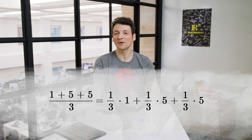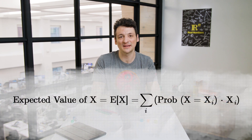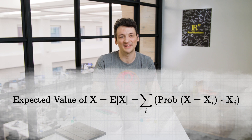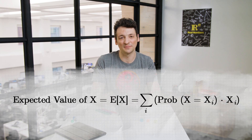Now, if you have a probabilistic process that generates a value, its expected value is the average of all possible outcomes, with each outcome weighted by its probability of occurring. So the definition of the expected value of a random variable is the sum over all possible values that variable takes on, times the probability that it takes on that value. Notice that once again the weights will add up to 1, because the sum of the probabilities of all possible outcomes is 1. But now they don't have to all be equal.